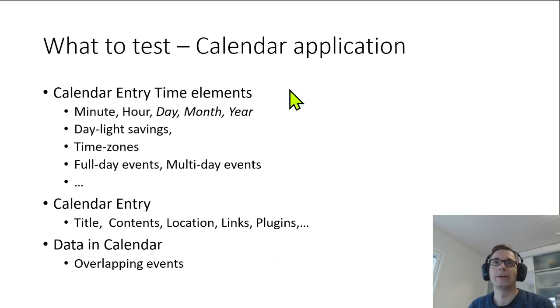Now we look into the calendar application again with respect to the question on what to test. So what has happened so far is that we have tested the calendar entry time elements day, month and year. Other entry time elements that probably should be tested are the minutes, we should also test daylight savings, we should also test time zones, we should also test full day events, multi-day events and so on.